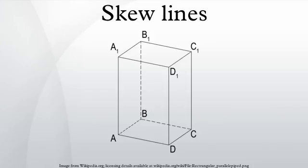In three-dimensional geometry, skew lines are two lines that do not intersect and are not parallel.